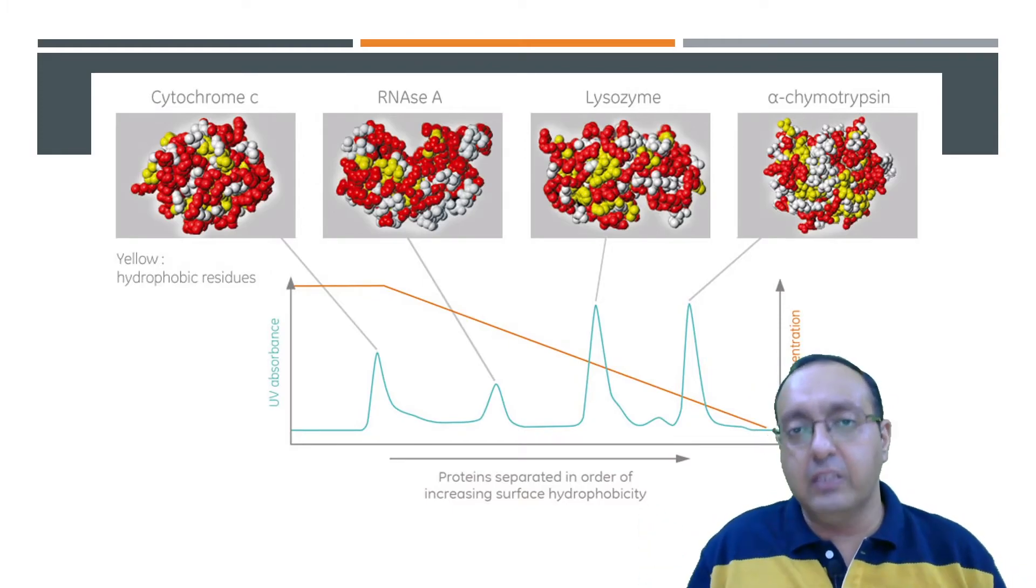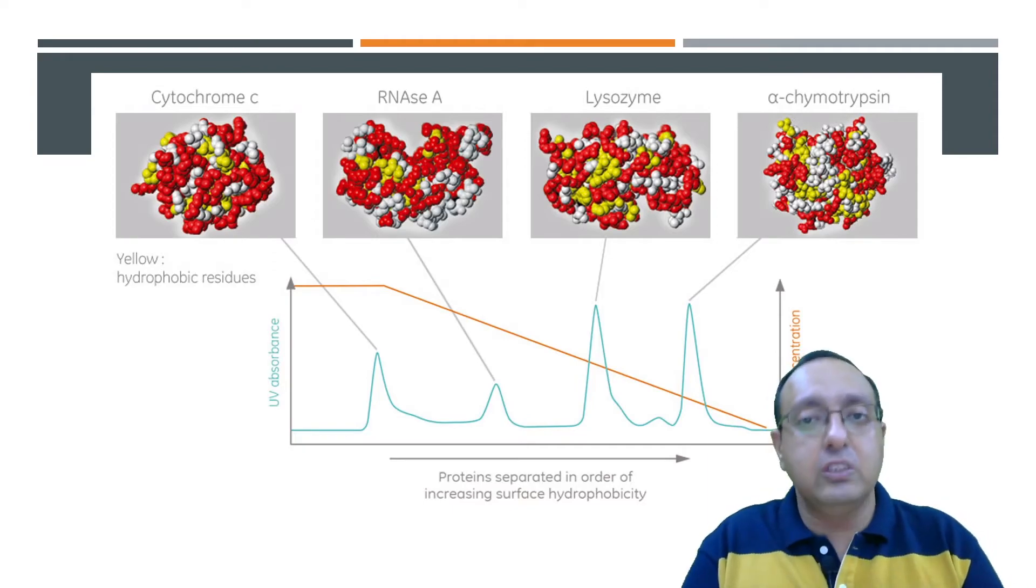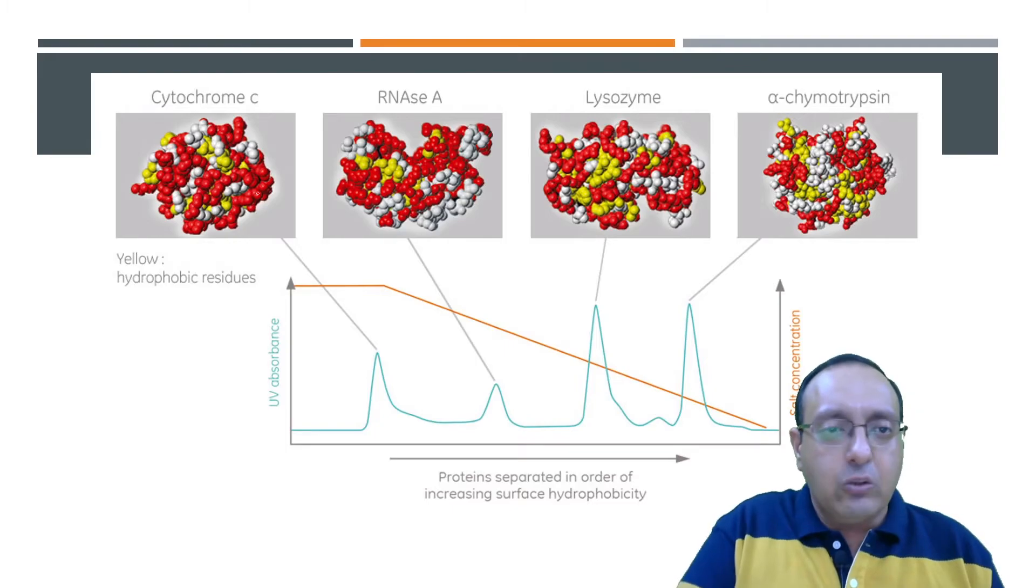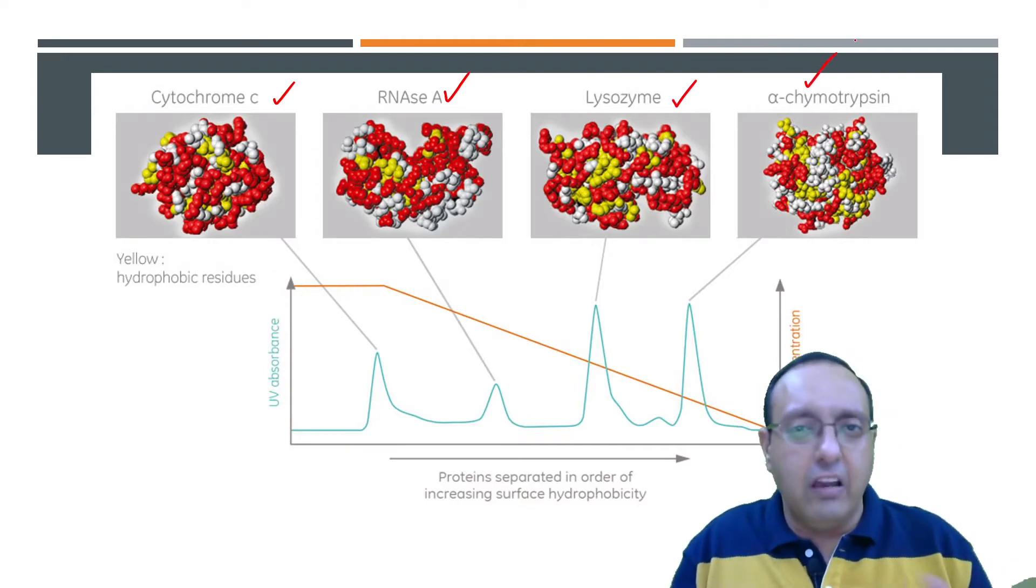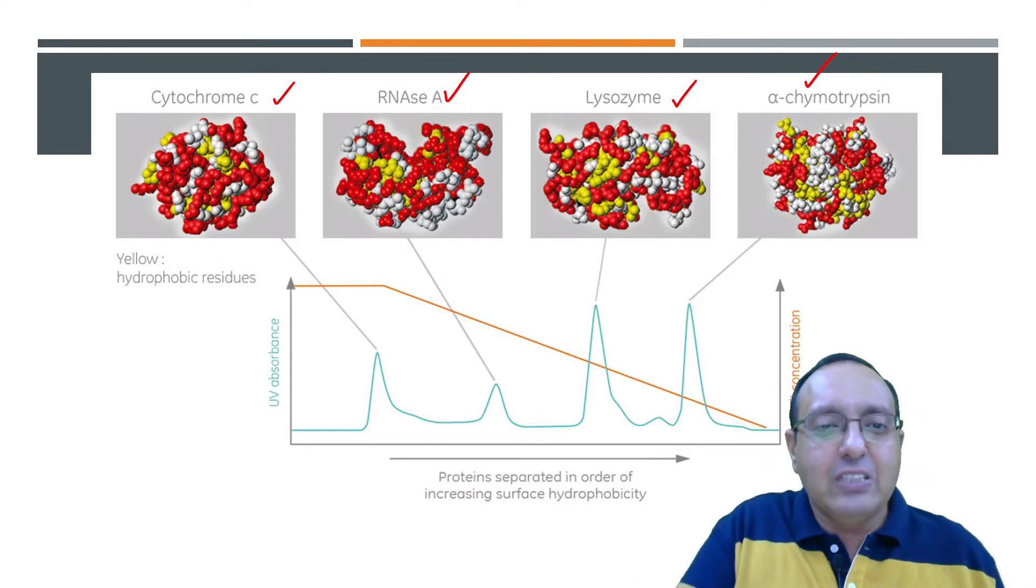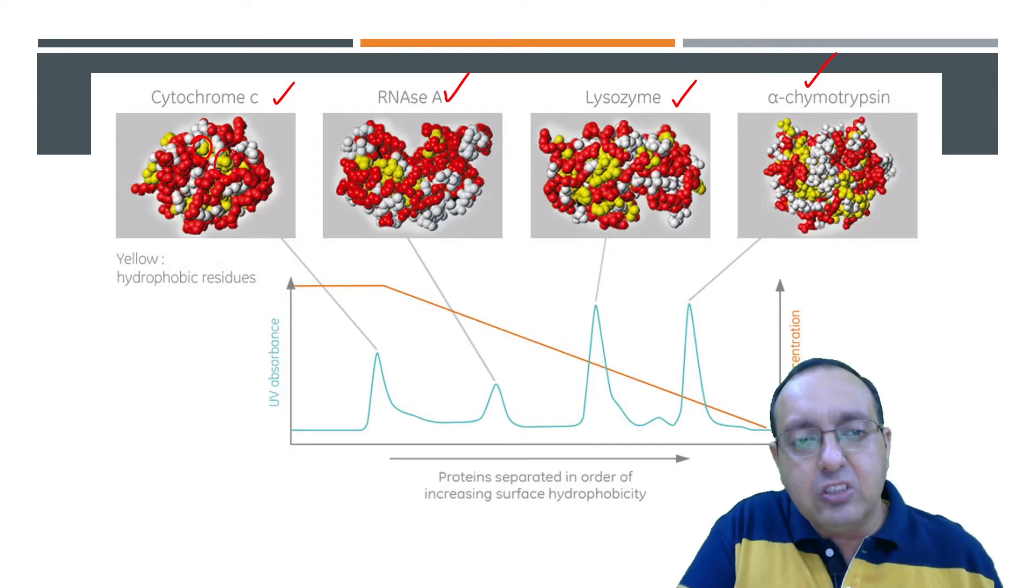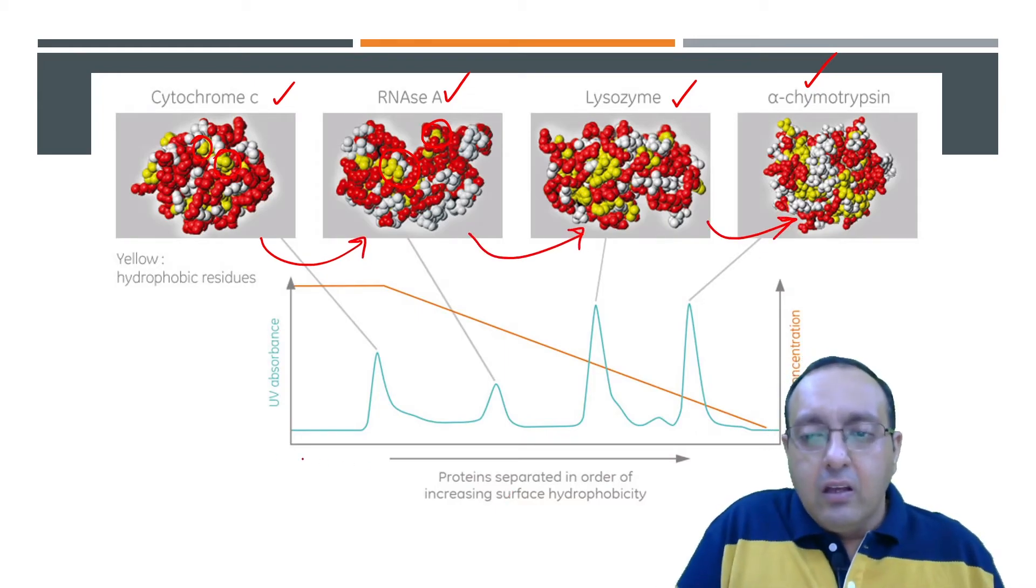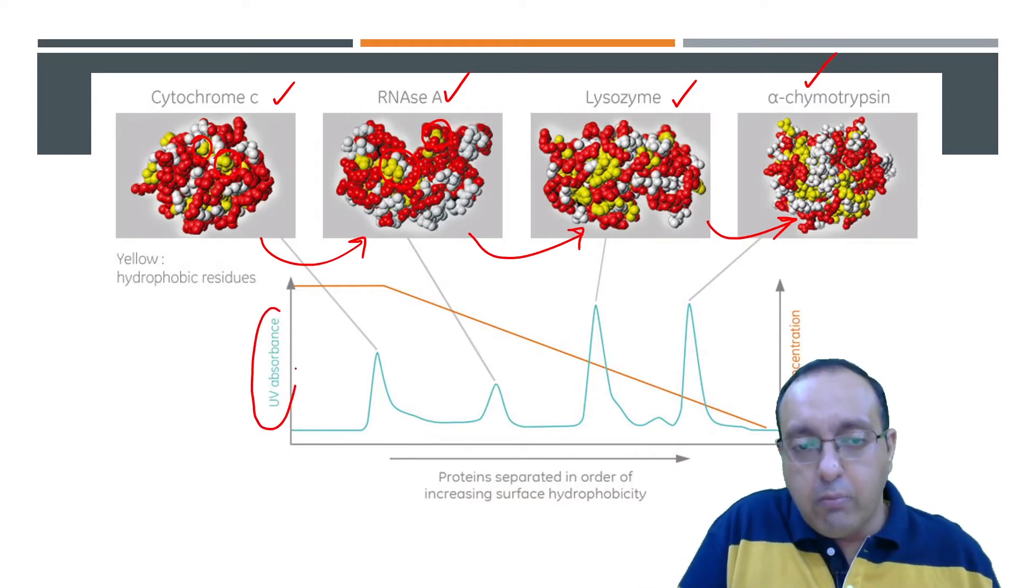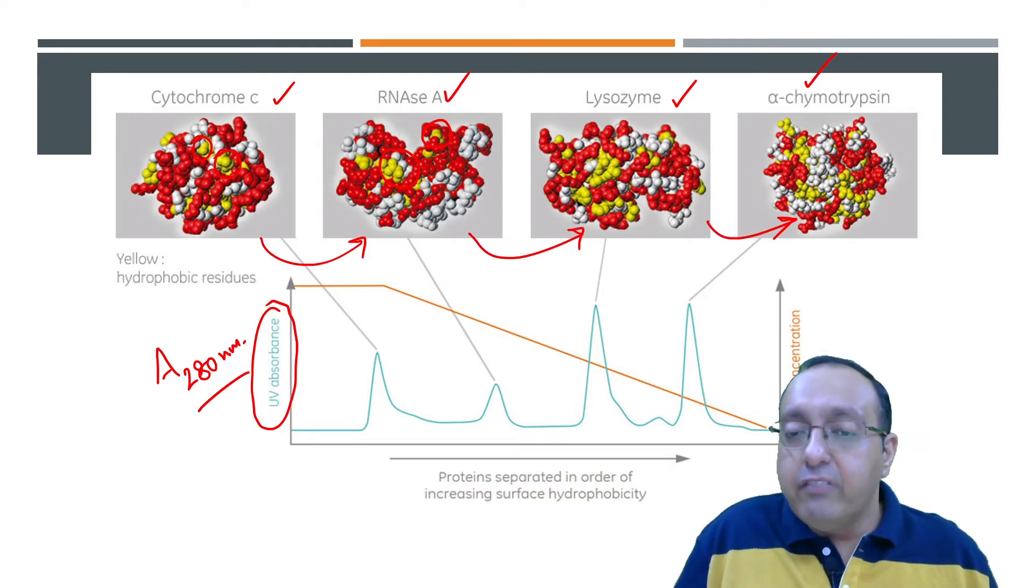They elute in that order from the column when we reduce the salt concentration. So here are four examples: Cytochrome C, ribonuclease A, lysozyme and alpha chymotrypsin, pretty well known proteins. And you can see the amount of hydrophobicity which is present on their surface depicted in yellow here. So you can see there is kind of an increasing hydrophobicity in these proteins. Now here on the graph is how these proteins are eluted as measured by UV absorbance at 280 nanometer.